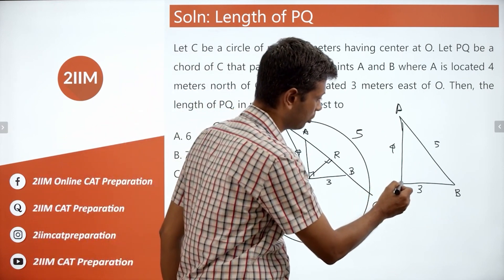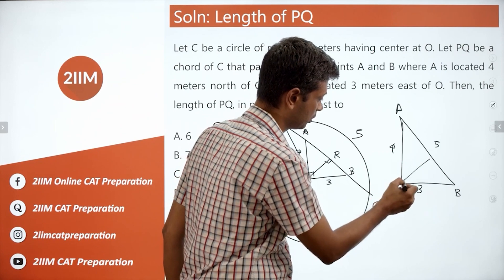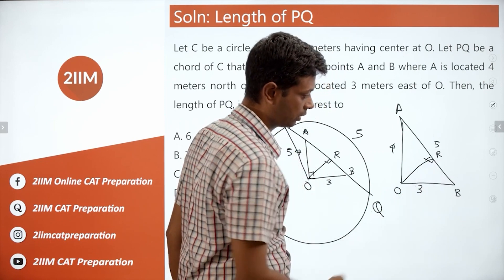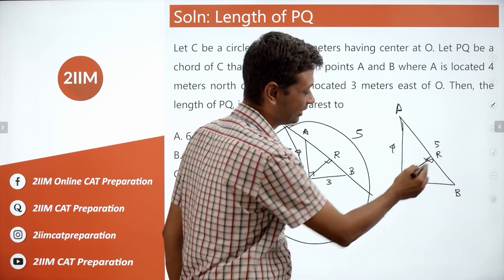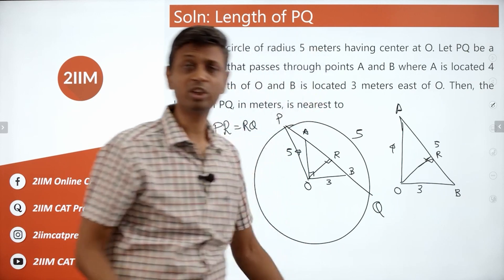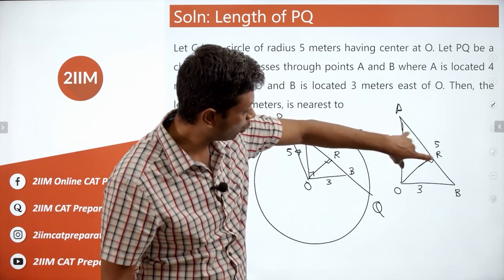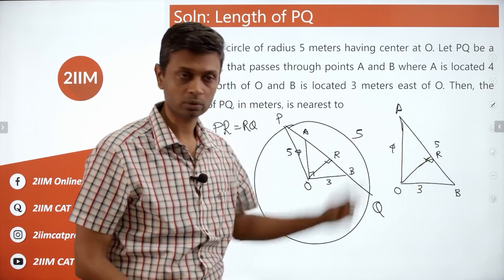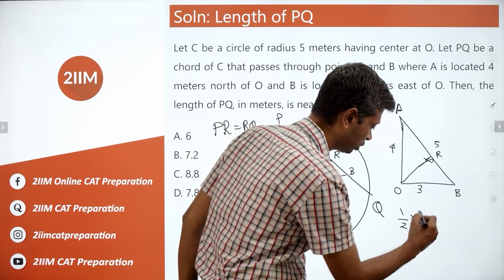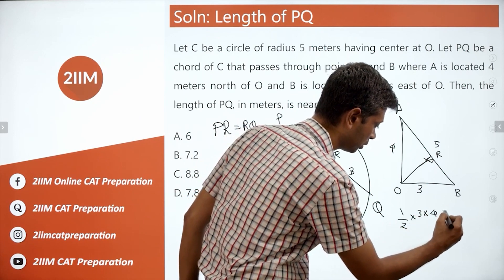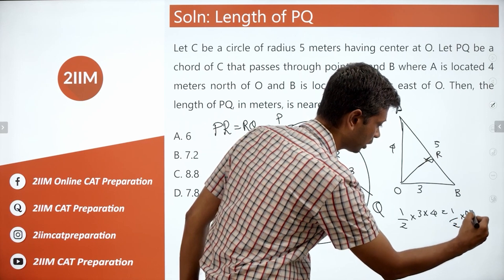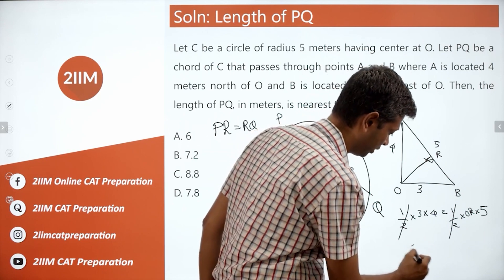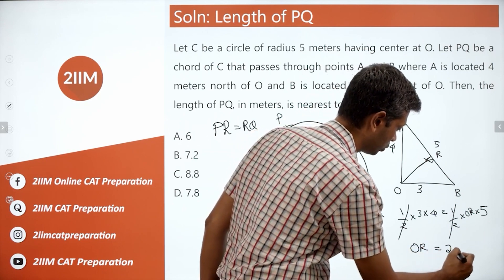From O, the perpendicular line here. This is OR. Imagine this to be 90 degrees, a straight line. So this is OR. Half into base into height is area. OR is the height when the base becomes AB. So OR into 5 is 3 into 4. So half into 3 into 4 is half into OR into 5. The half disappears. OR is 12 by 5, or OR is equal to 2.4.